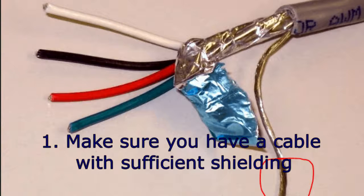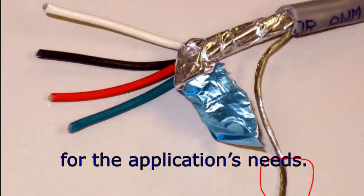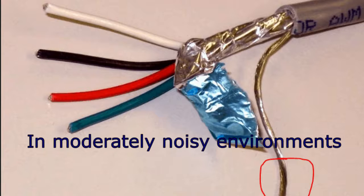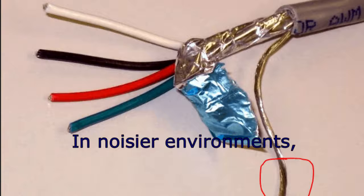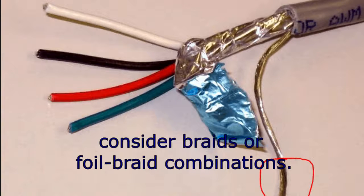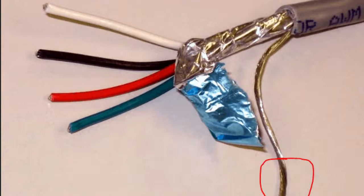Practical guidelines for effective shielding: One, make sure you have a cable with sufficient shielding for the application's needs. In moderately noisy environments, a foil alone may provide adequate protection. In noisier environments, consider braids or foil-braid combinations.